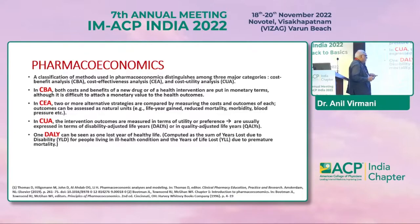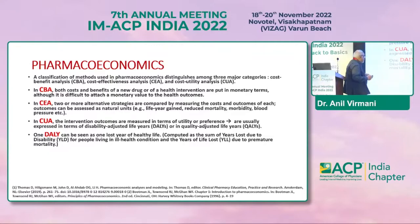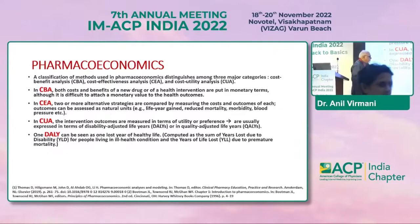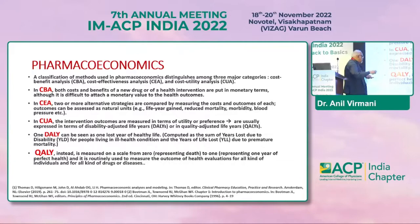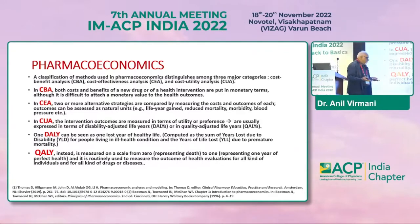A DALY can be seen as one year of lost healthy life. It is computed as the sum of years lost due to disability for people living in ill health, and the years of life lost due to premature mortality. The quality-adjusted life year (QALY) is measured on a scale from zero, representing death, to one, representing one year of perfect health. It is routinely used to measure the outcome of health evaluations for all kinds of individuals, drugs, and diseases.